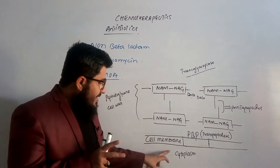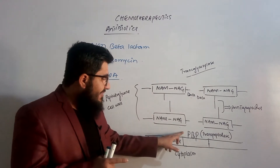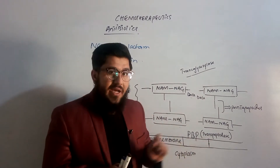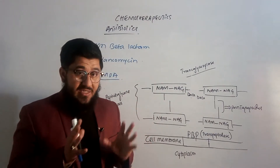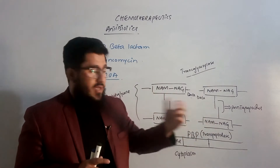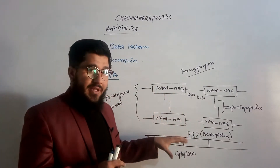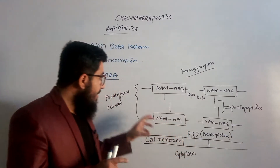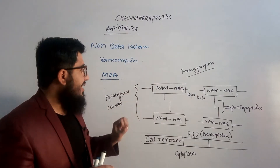The cytoplasm is covered by the cell membrane, and on the cell membrane we have the penicillin binding protein, which is actually a transpeptidase. There are a number of transpeptidase enzymes, and this is one of those — it is the very enzyme located on the cell membrane. Now, what is its job? We will understand its role in cell wall synthesis.